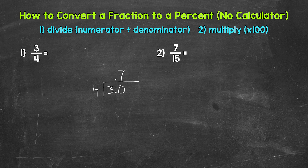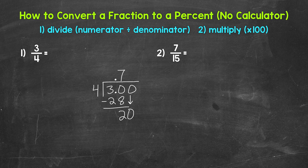Now we multiply. Seven times four is 28. Subtract — 30 minus 28 is two. We don't have a clean cut zero at the bottom, so we can use another zero that we can bring down to continue the problem. So now we have 20. 20 divided by four is five. Put our five up here, then multiply — five times four is 20. Subtract — 20 minus 20 is zero. We have that clean cut zero at the bottom, so we are done. 0.75.